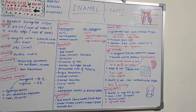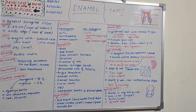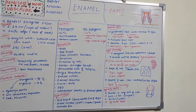Regarding chemical properties, enamel has the highest inorganic content of all dental tissues at 96%, compared to cementum and dentine which have higher organic content. The inorganic content is basically hydroxyapatite — calcium phosphate — along with ions such as strontium, magnesium, lead, and fluoride.